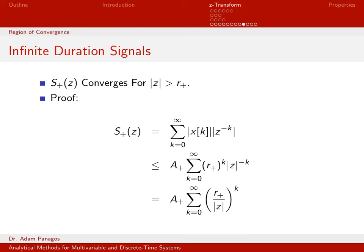Then, the same type of algebra: instead of R plus to the K times the magnitude of Z to the minus K, I write that as R plus over the magnitude of Z, all to the K. This is already in a form that clearly converges as long as the magnitude of this quantity is less than 1.